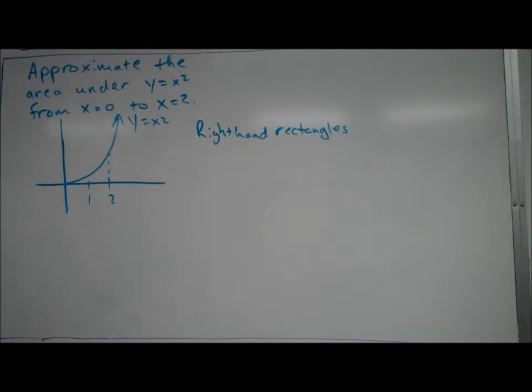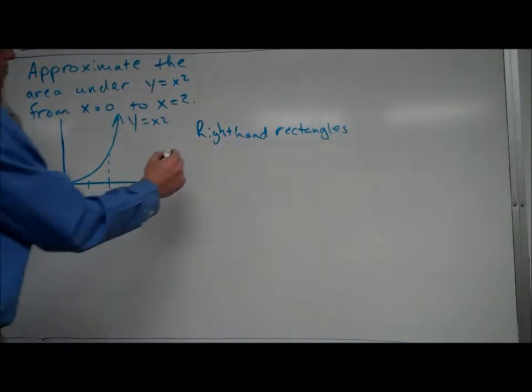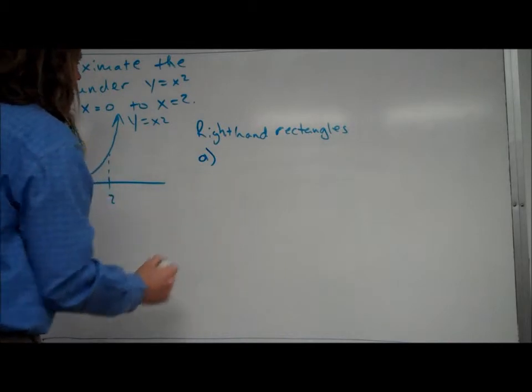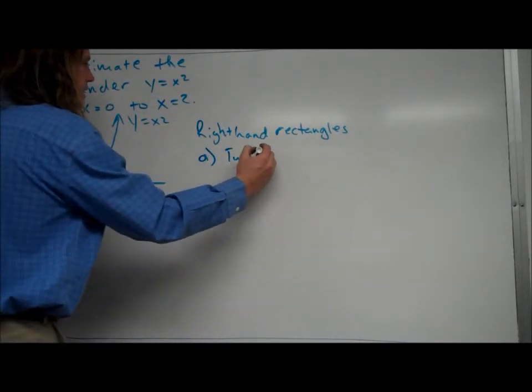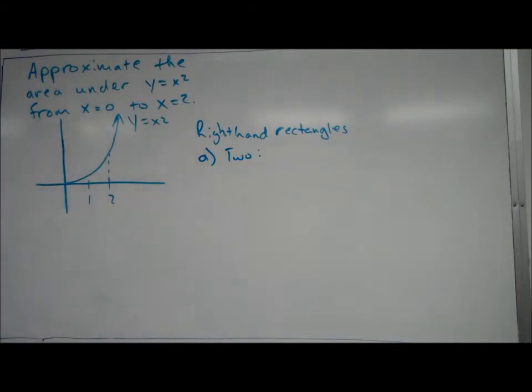And for right-hand rectangles, we'll just do two rectangles to get the idea here. We're going to start out with using two rectangles, and in the problem, that'll tell you how many rectangles to use. We're going from zero to two, we're using the same graph, we're using two rectangles, so that means the width of each rectangle is going to be one, since we're going to make them equal widths.